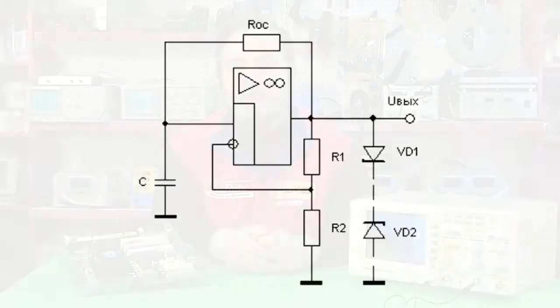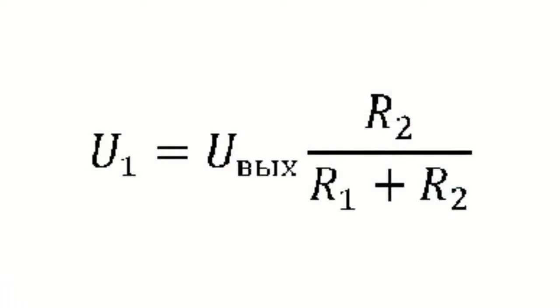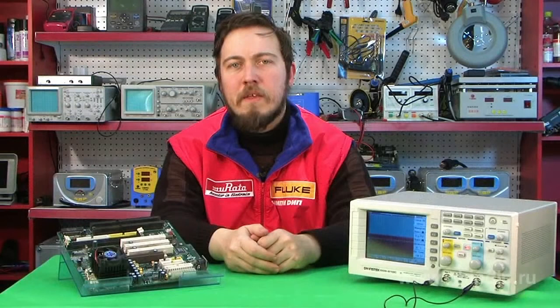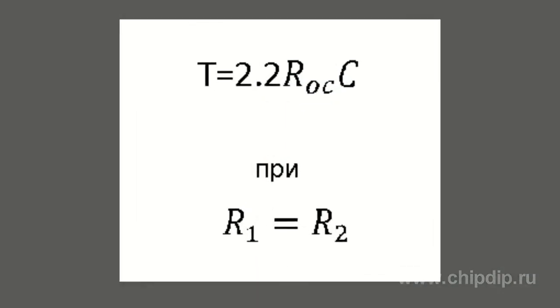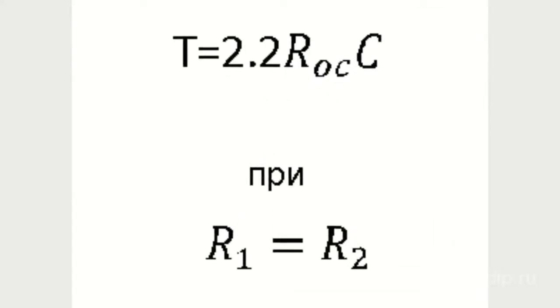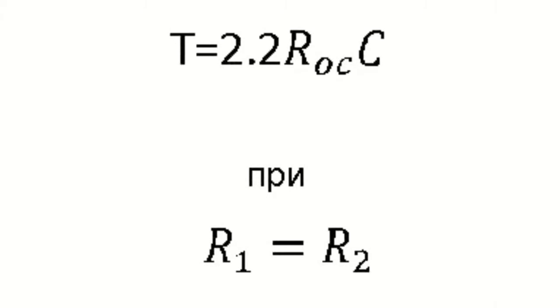The operational amplifier in the circuit operates in comparator mode and compares the capacitor voltage and the voltage U1, which equals the product of the output voltage and the quotient of R2 divided by the sum of R1 and R2. In the case when R1 equals R2, the oscillation period can be calculated as 2.2 times the product of capacitance C and resistance R_feedback.